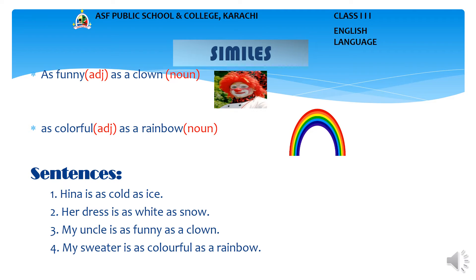Another example: As funny as a clown. In this phrase, funny is an adjective and clown is a noun. This simile uses the word 'as' and compares the word funny and clown. Similarly, as colorful as a rainbow. In this phrase, colorful is an adjective and rainbow is a noun. This simile uses the word 'as' and compares the word colorful and rainbow.